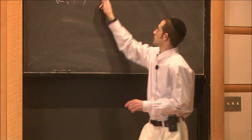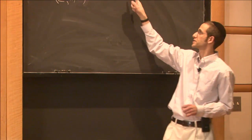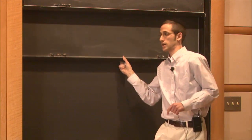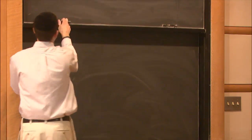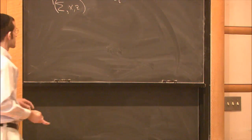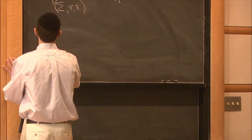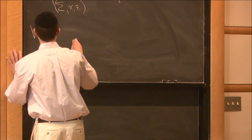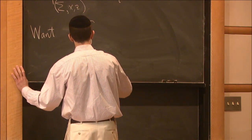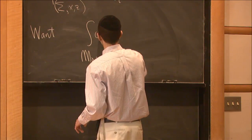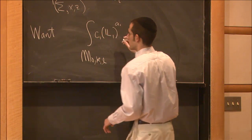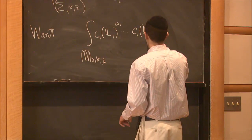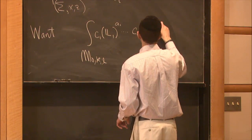What we want to do is look at integrals of C_1(L_1)^{a_1} · … · C_1(L_L)^{a_L}. This is a complex line bundle, and this is its first Chern class. This integral is not defined because this moduli space is a smooth manifold with corners — not a complex manifold. The Chern classes of L_i belong to absolute cohomology of this moduli space, but in order to integrate something over the moduli space, it needs to belong to relative cohomology.